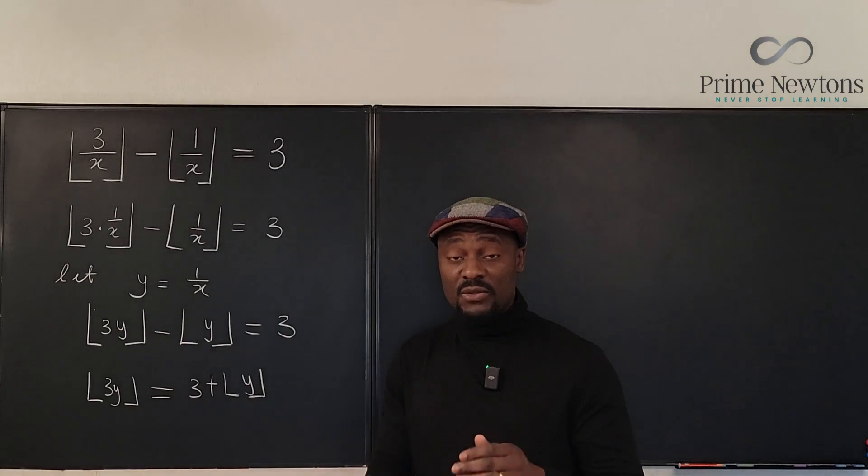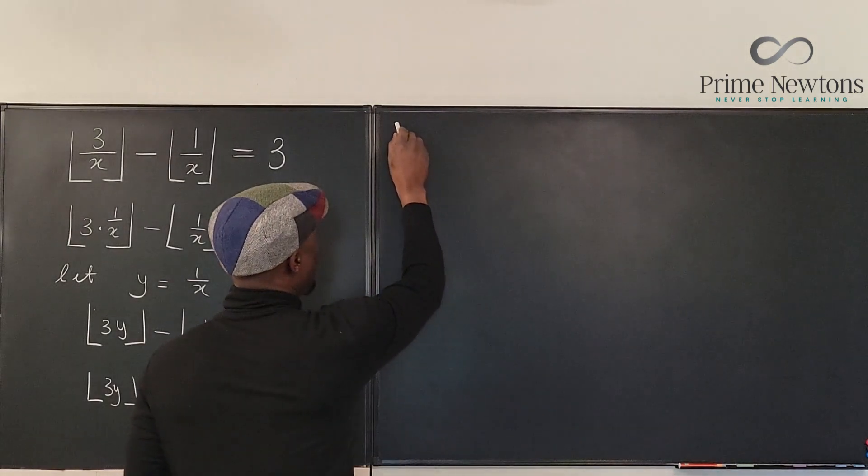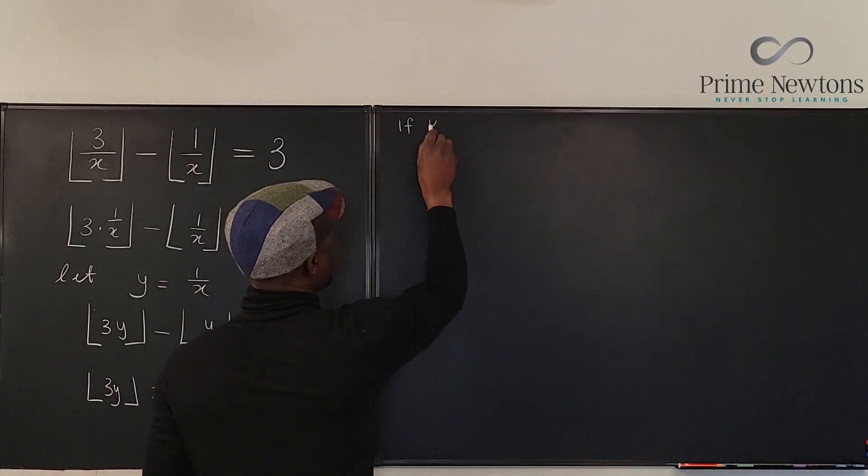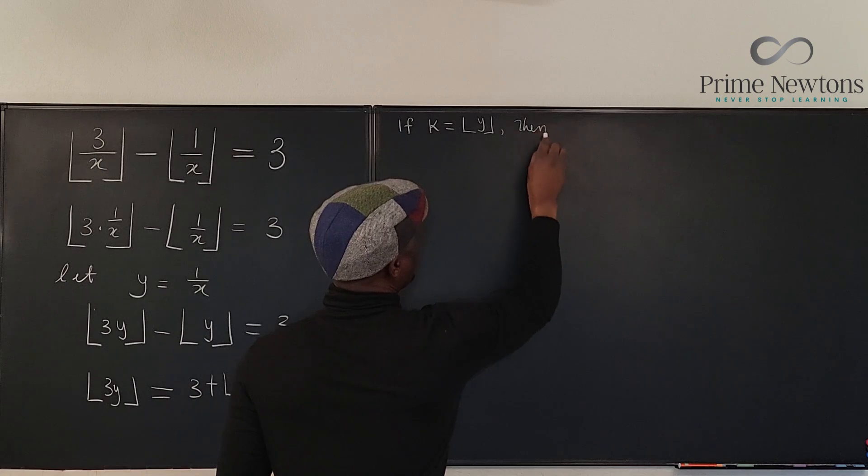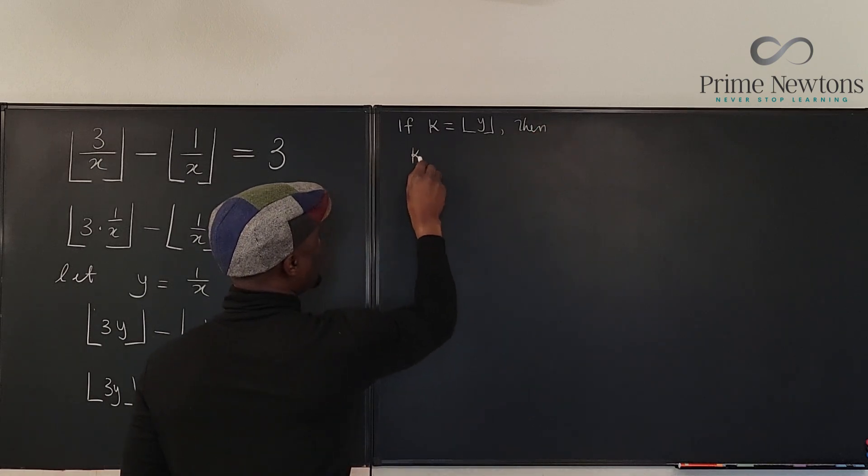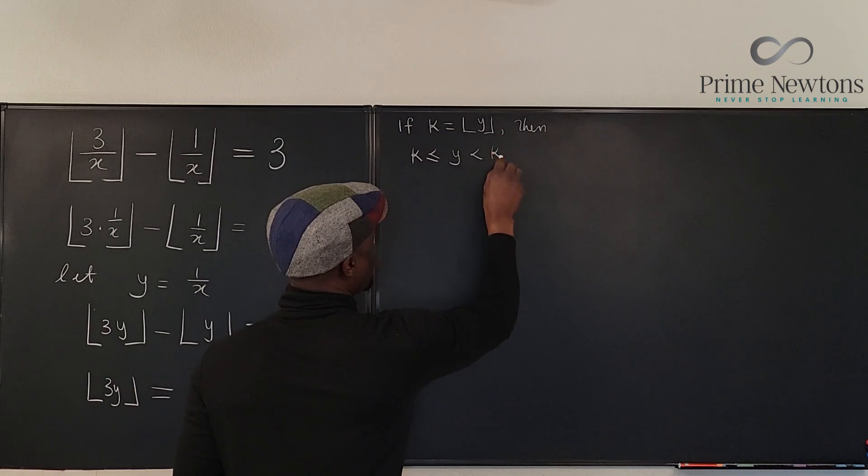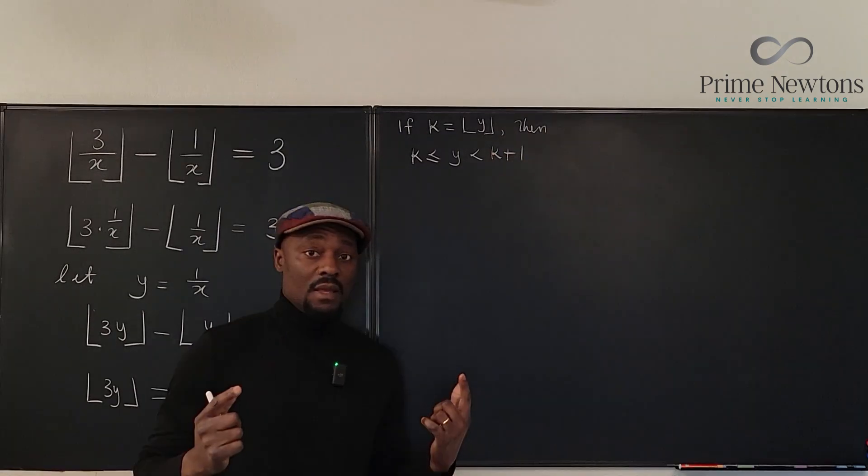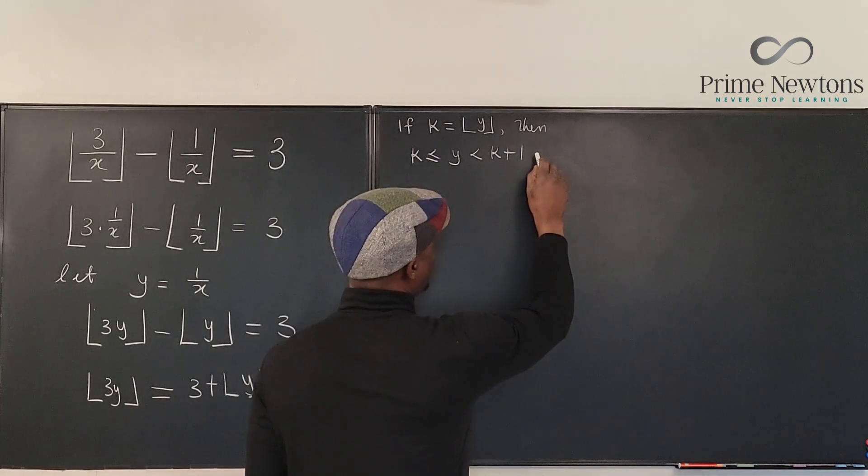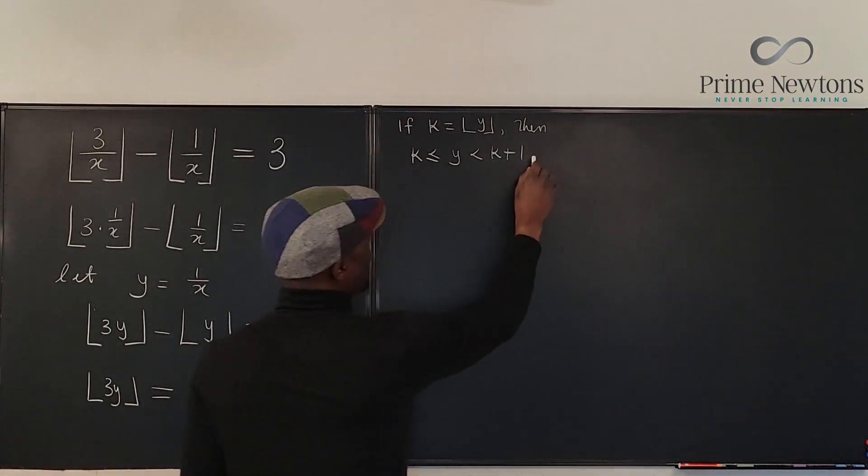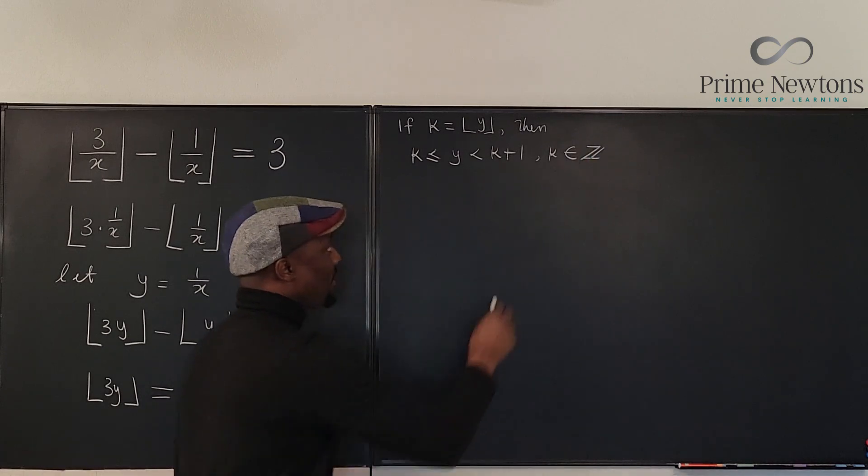Remember the relationship between the floor of a number and the number itself. We know that if k is equal to the floor of y, then k is less than or equal to y, and y is less than k plus 1. And remember that k is an integer. So let's just add that as a fact. We say that k is an integer.